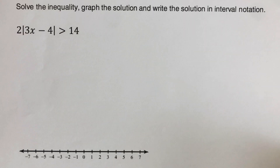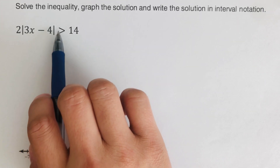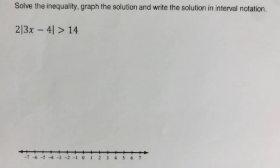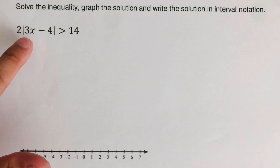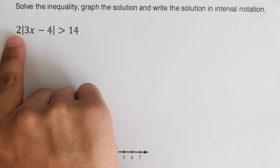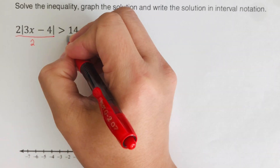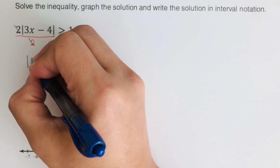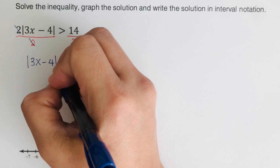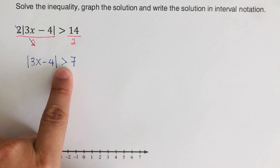Let's solve this example: graph the solution and write the solution in interval notation. The problem reads: two times the absolute value of three x minus four is greater than 14. The first step is to isolate the absolute value expression by itself. The absolute value is not isolated because there's a 2 in front of it, so we divide both sides by two, giving us the absolute value of three x minus four is greater than seven.